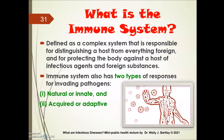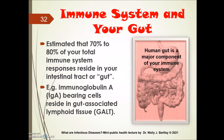The immune system is defined as a complex system responsible for distinguishing a host from everything foreign and for protecting the body against infectious agents and foreign substances. It has two types of responses for an invading pathogen: natural or innate, and acquired or adaptive. Interestingly, most of your immune system is actually in your gut — approximately 70 to 80% of total immune system responses reside in the intestinal tract, involving immunoglobulin A, B-cells, and GALT cells.